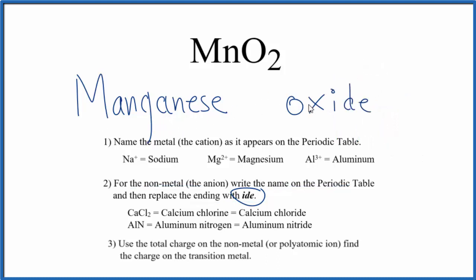So at this point, we have manganese oxide. But manganese is a transition metal. It can have different oxidation states depending what it's bonded to. So we have to look at what it's bonded to. That's the oxygen here.